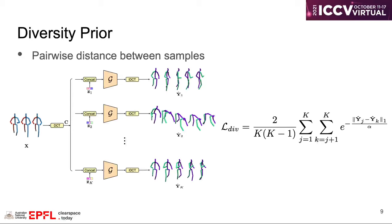As to the diversity prior, we follow DLO to use an energy-based diversity prior, which aims to increase the pairwise distance among k samples. The alpha here is a normalizing factor.